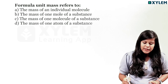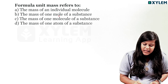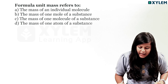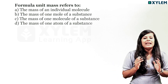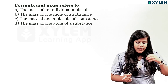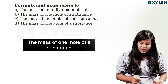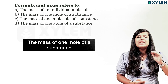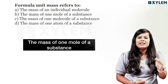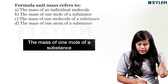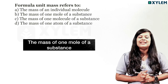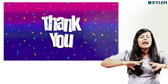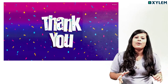Formula unit mass refers to: the mass of an individual molecule; the mass of one mole of a substance; the mass of one molecule of a substance; or the mass of one atom of a substance. Formula unit mass refers to one formula unit. If we are covering 10 marks of MCQ questions, we will do these MCQ questions.